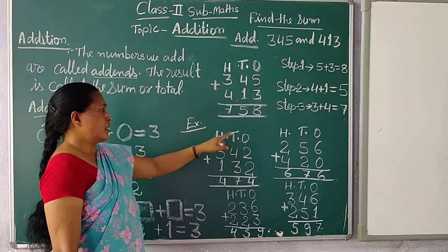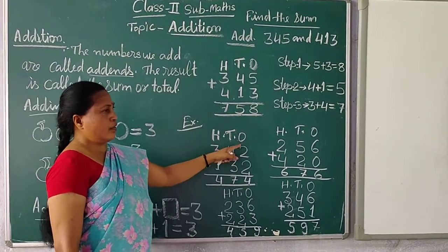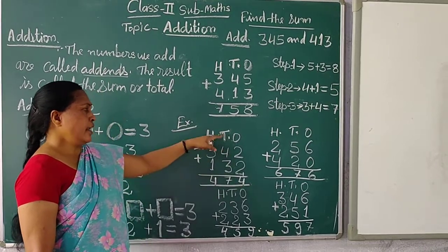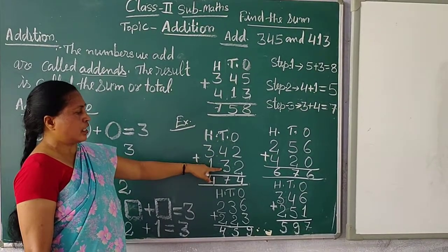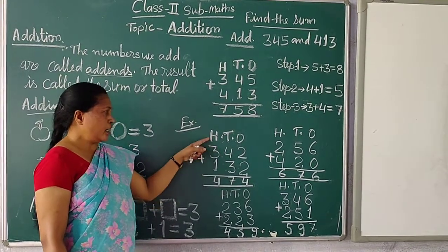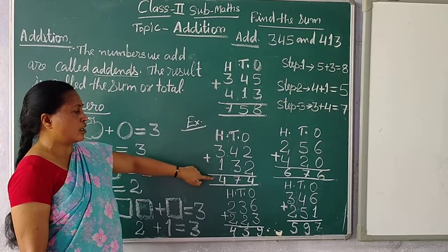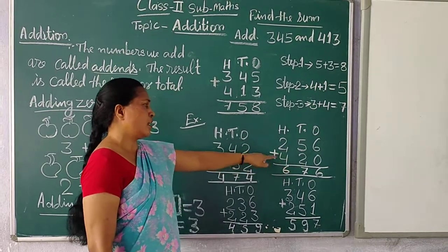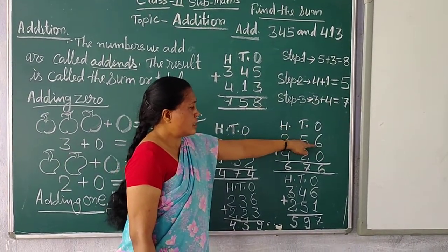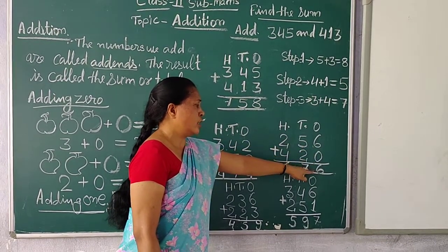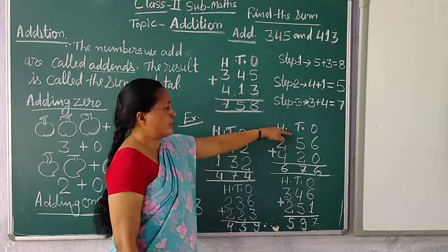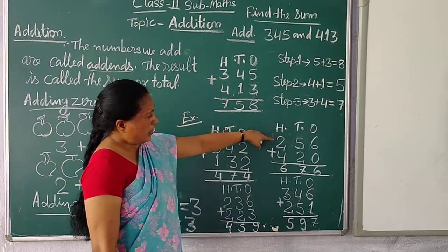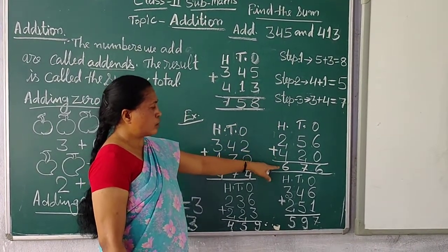And the next number — ones place, tens place, and hundreds place. Two plus three, four plus three, equal to four. And the ones place is two hundred fifty-six and four hundred twenty. So watch this: six plus zero equals six, and five plus two equals seven, and two plus four equals six.